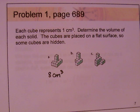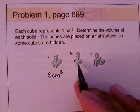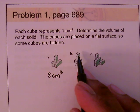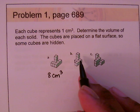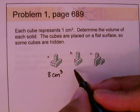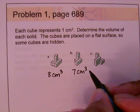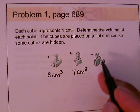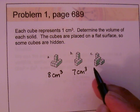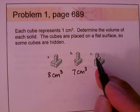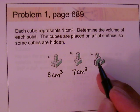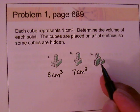For part b: counting the cubes — one, two, three, one in the back makes four, five and six visible, with one more hidden underneath, giving a total of seven cubic centimeters. For part c: counting gives one through eight visible, with one in the back making nine.